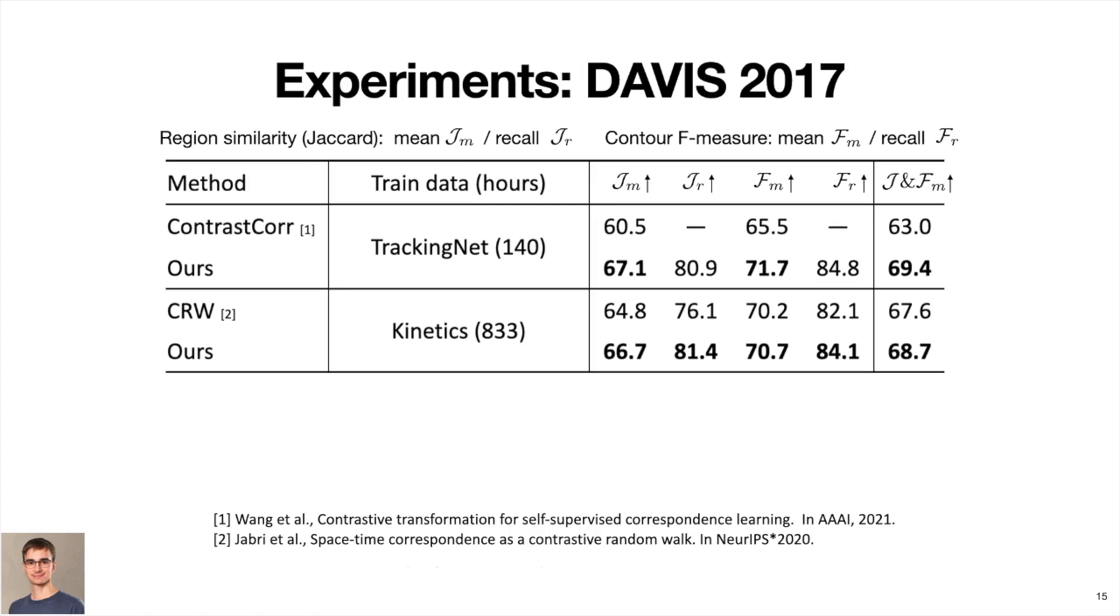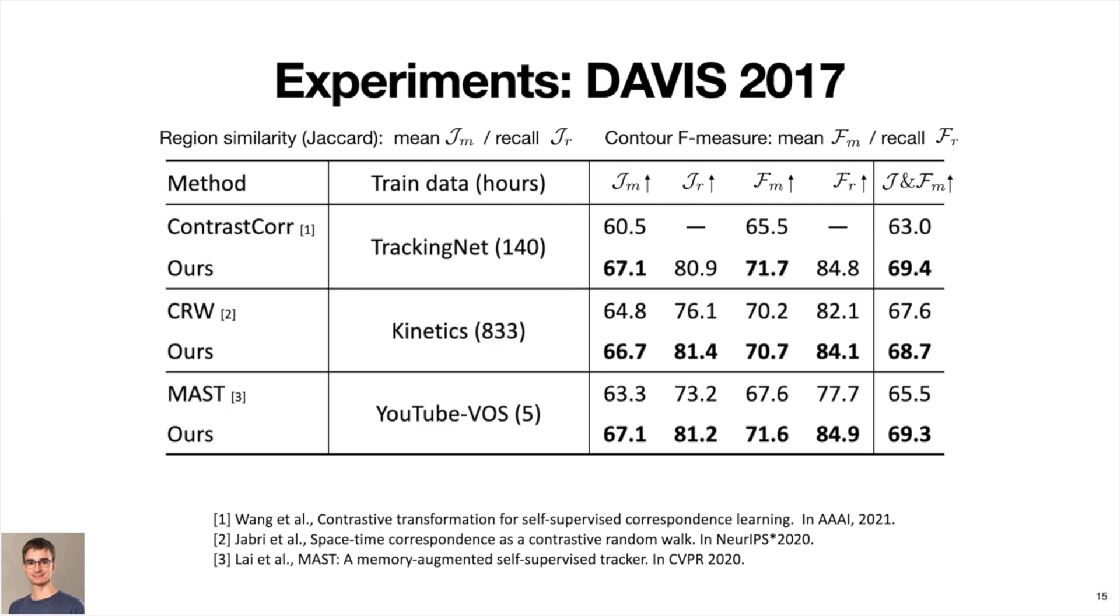Trained on a smaller dataset, YouTube-VOS, we compared to MAST, an approach that uses an image reconstruction objective. Our approach not only significantly improves over this work, but is also on par with the results obtained from much larger datasets. This suggests that our approach is more data-efficient.